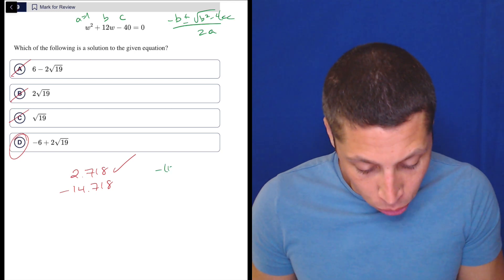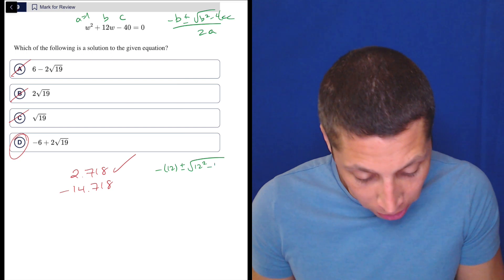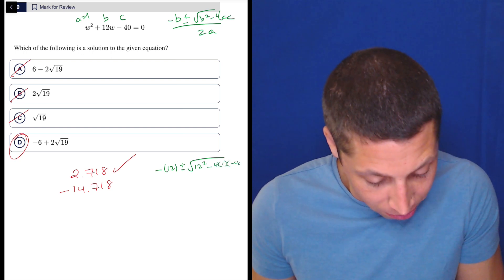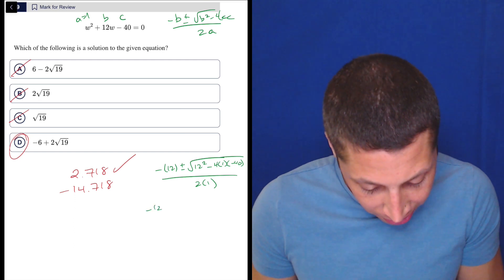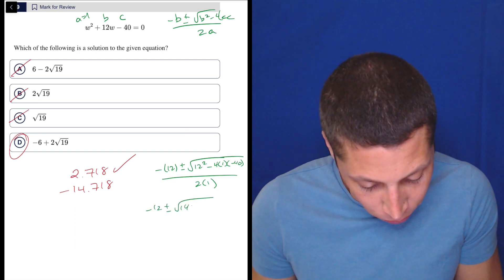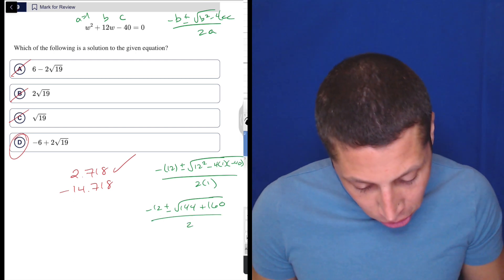So that's negative 12 plus or minus the square root of 12 squared minus 4 times 1 times negative 40 all over 2 times 1.